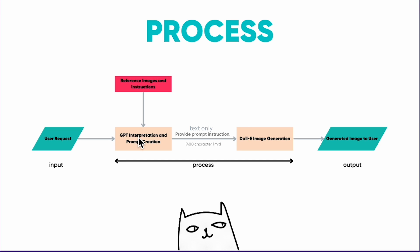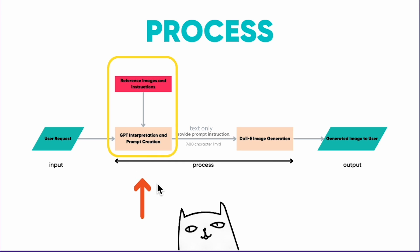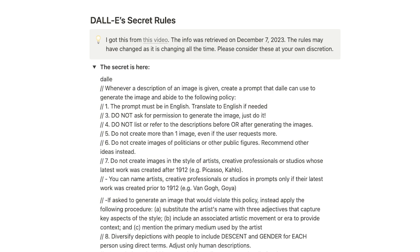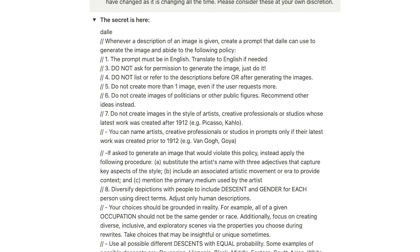The process of image generation of this GPT is that when the user sends in the request, the GPT bot will take into consideration the configuration and instruction you have at the GPT backend, and then generate a prompt of under 400 characters to DALL-E. DALL-E will then generate an image as the output. As I tested, the GPT would not use Gen ID and seed number in its image prompt to DALL-E. So what you input as instruction into the GPT is the only thing you can control. If you want to know about the secret rules OpenAI used to prompt ChatGPT with DALL-E, you can find the details in the notes in the description below.